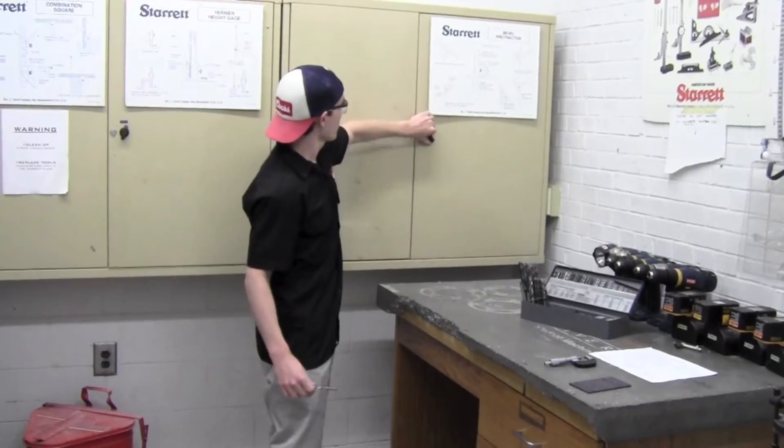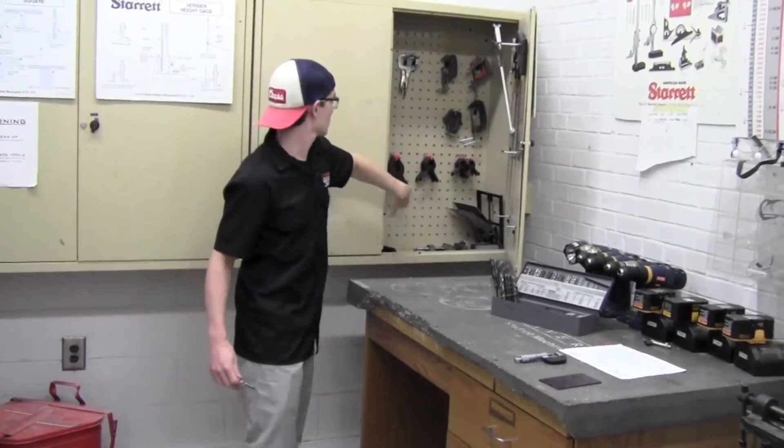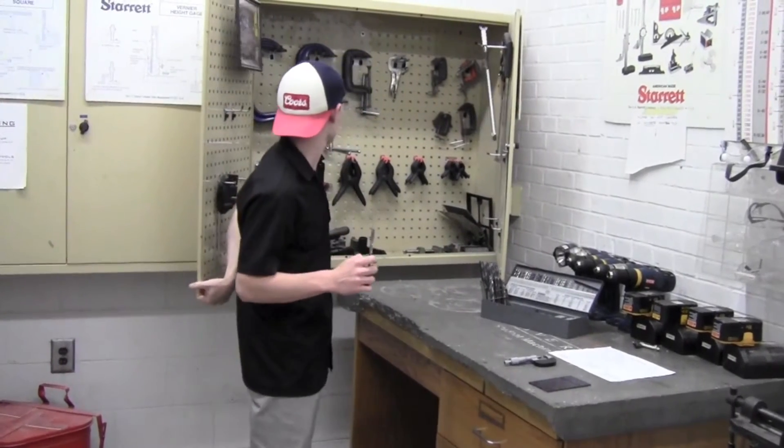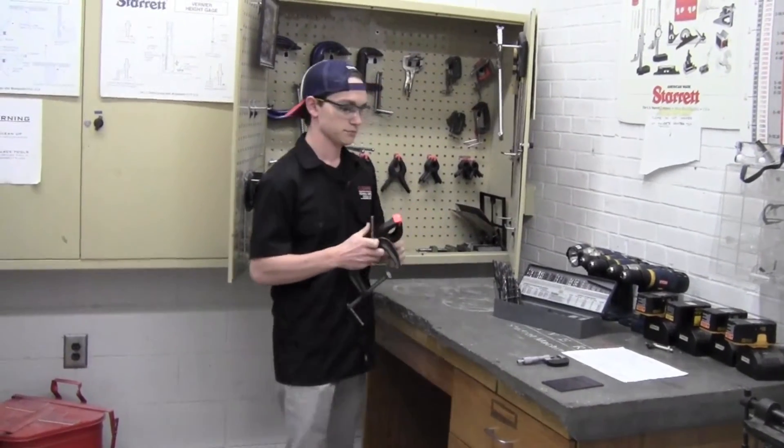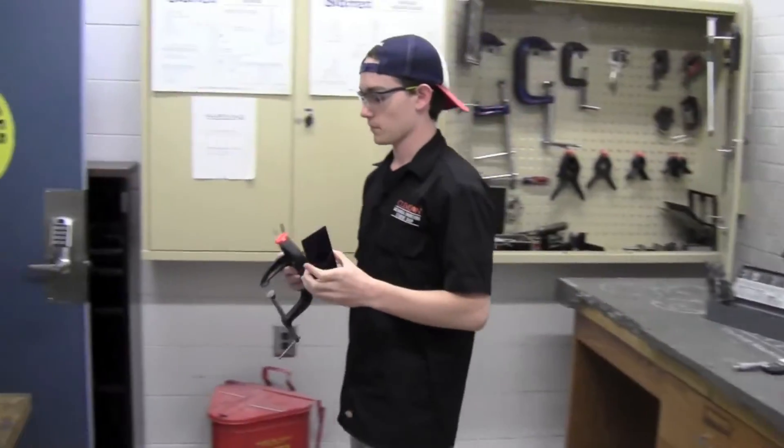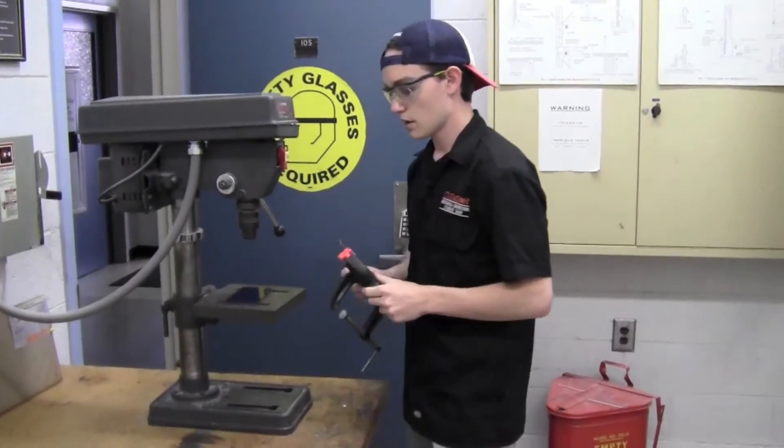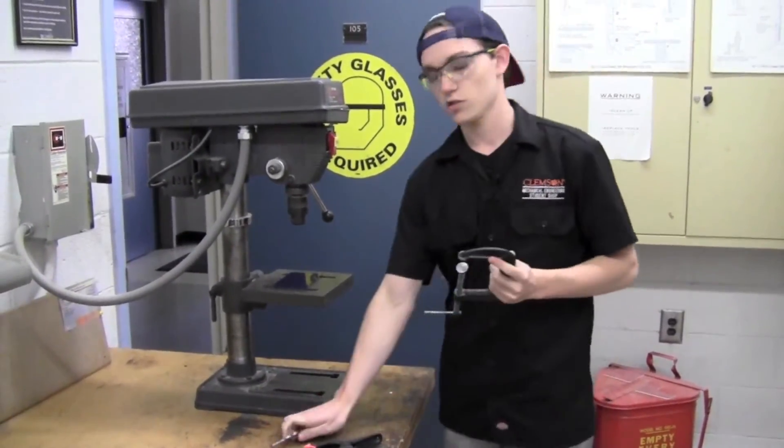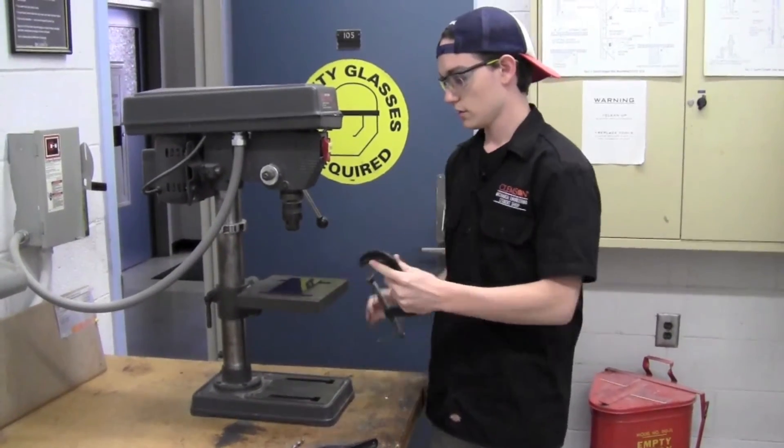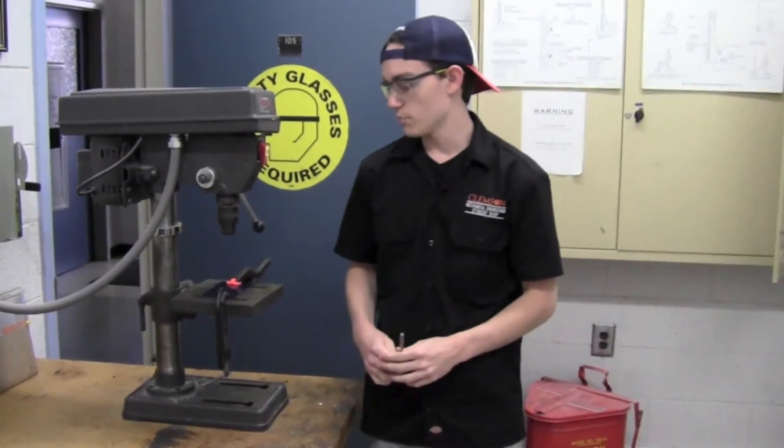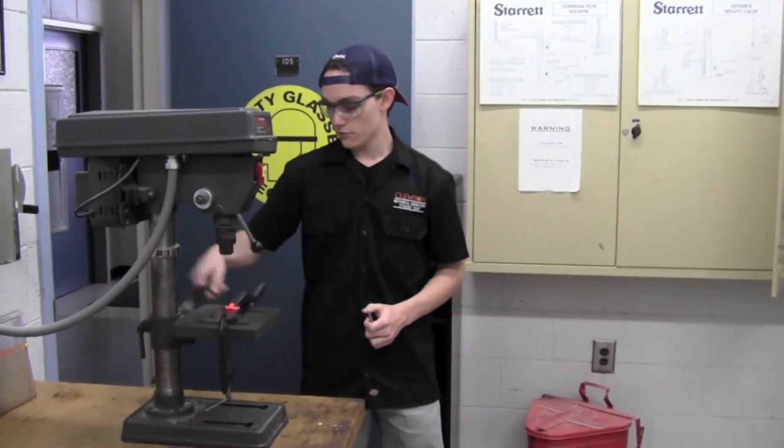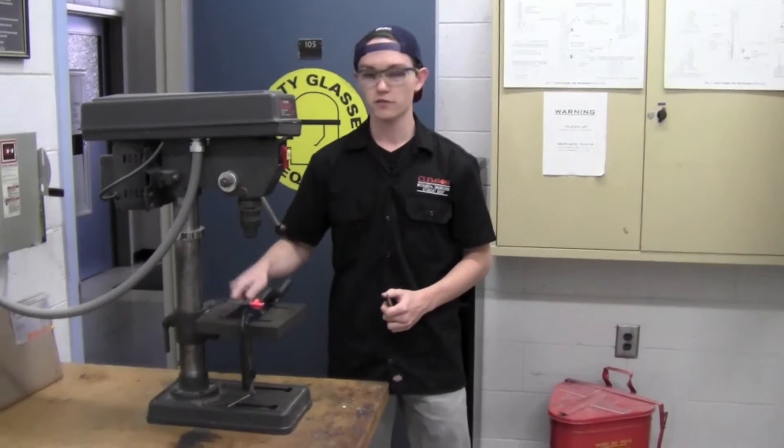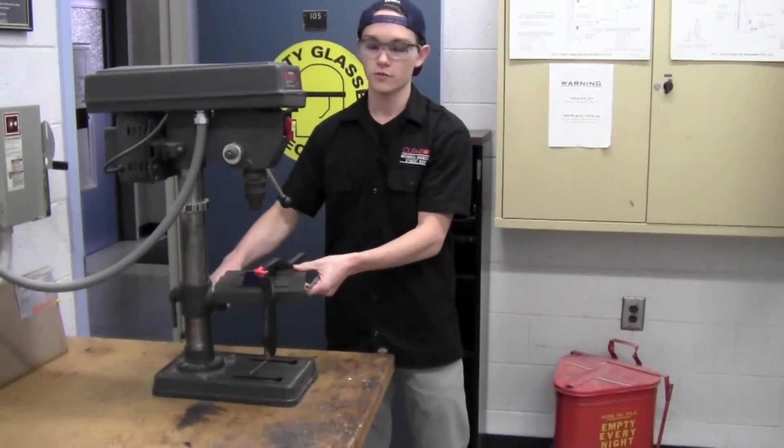In this cabinet, we have a variety of clamps that you can use to secure your part to the drill press. I'll just grab a couple here. So you'll take your part and put it on the drill press and you'll begin securing the part to it. You'll want to make sure that the part is flush with the drill press to ensure that you get an even square cut. And there are a variety of ways that you can move this drill press around to adjust so that you can get just the right hole.